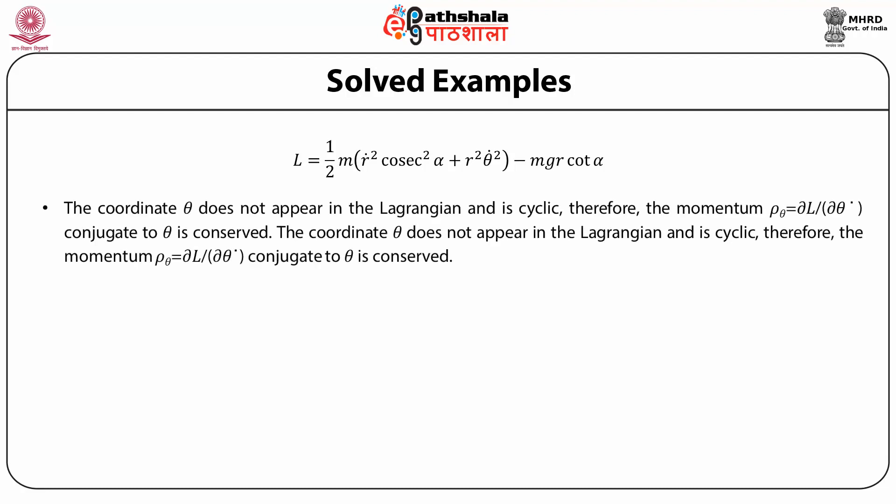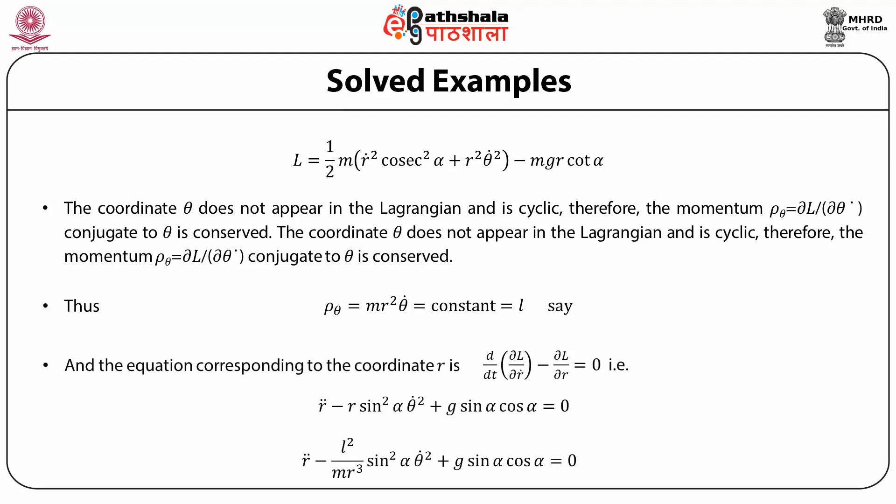The coordinate theta does not appear in the Lagrangian, which means theta is a cyclic variable and therefore the momentum conjugate to theta, namely p_theta = ∂L/∂theta-dot, is conserved. Thus p_theta = mr² theta-dot = constant, which you can recognize as the angular momentum L. The equation corresponding to the coordinate r is d/dt(∂L/∂r-dot) − ∂L/∂r = 0, which becomes r-double-dot − r sin²(alpha) theta-dot² + g sin(alpha) cos(alpha) = 0.